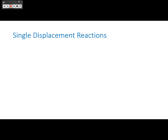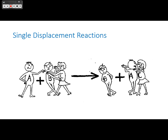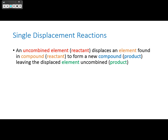Single displacement reactions are where one element comes in and displaces a different element from a compound. An uncombined element displaces an element found in a compound to form a new compound, leaving the displaced element uncombined. You have a compound and a lone element as reactants, making a new compound with a leftover lone element: A + BX → AX + B.